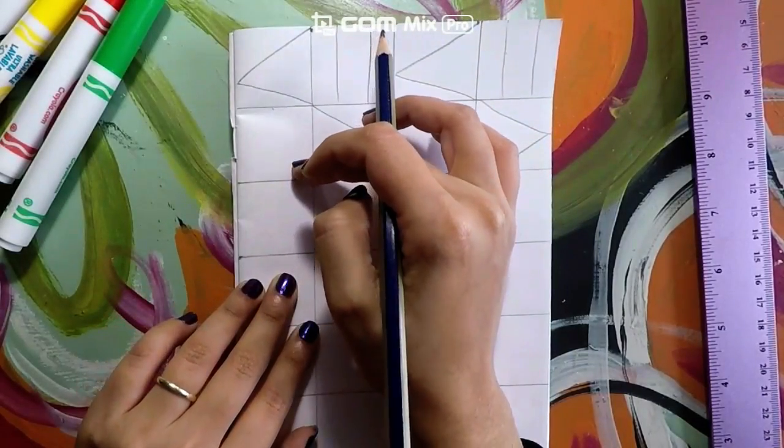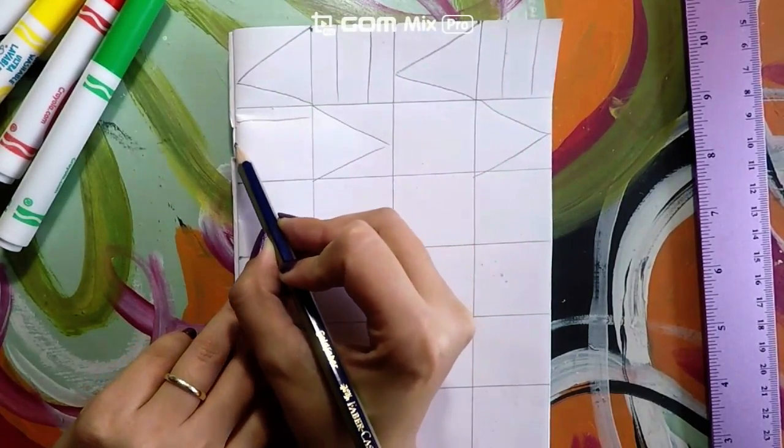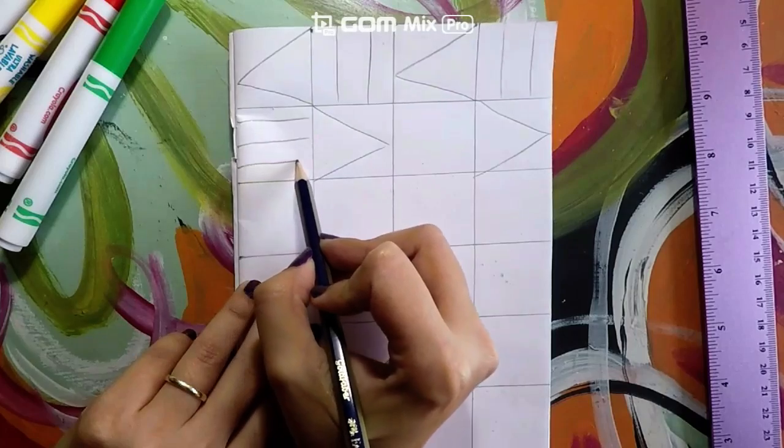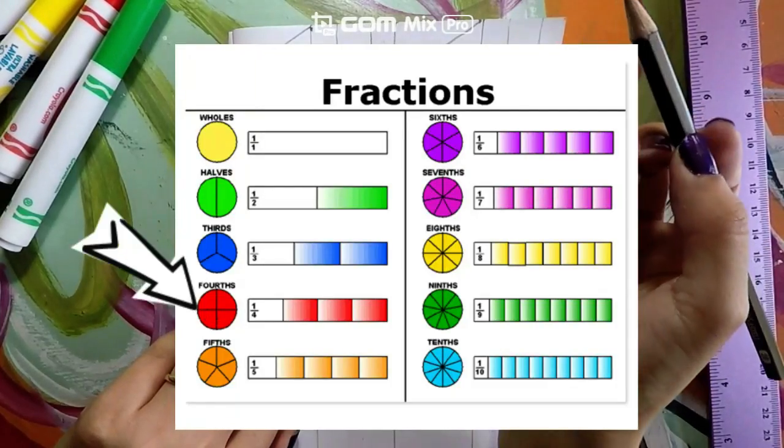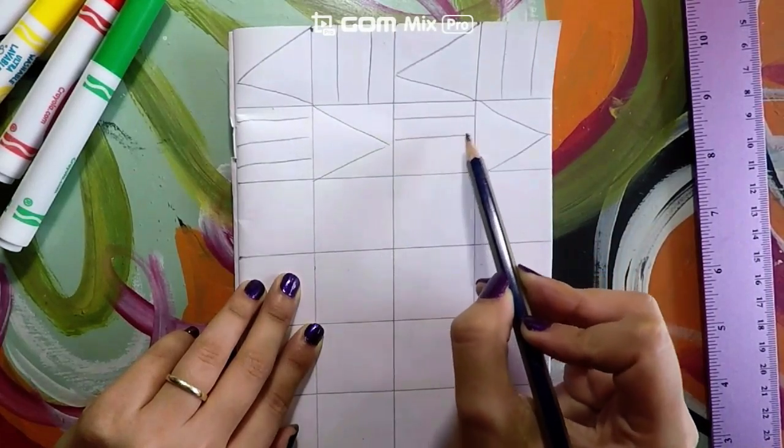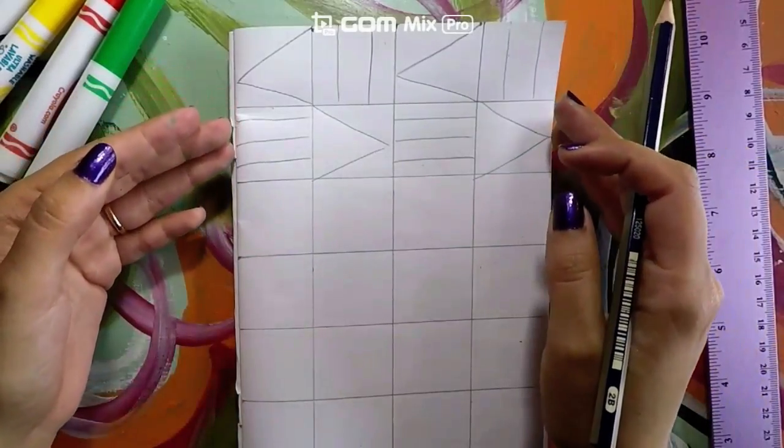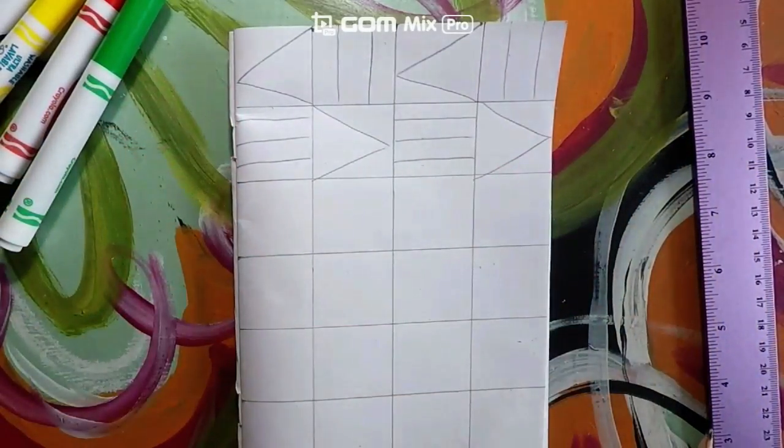I am going to partition this square into fourths. See how I have four equal parts? What about you?